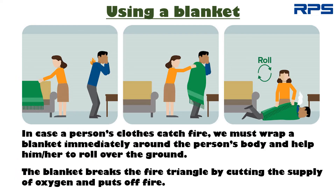Another method of controlling fire is using a blanket. If a person's clothes catch fire, wrap a blanket immediately around the person's body and help them roll over the ground. The blanket breaks the fire triangle by cutting the supply of oxygen and puts out the fire.